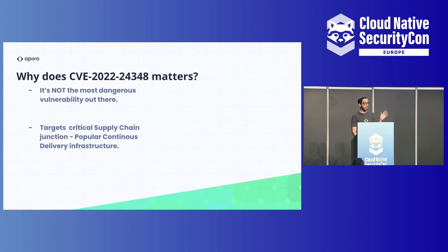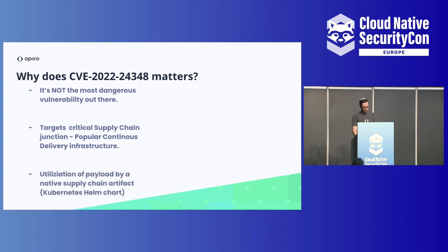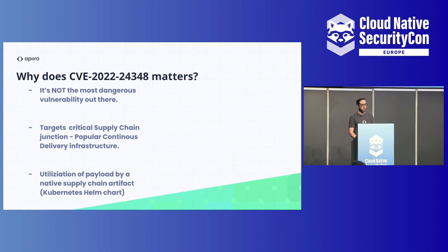It targets the critical aspects of a supply chain — not just a supply chain attack but also the CD system itself. It comes with a very native way of attacking, meaning you don't need a special open port or anything out of the default. The payload utilization is interesting because it uses Helm charts specifically, covering the most common way of using CI/CD systems.